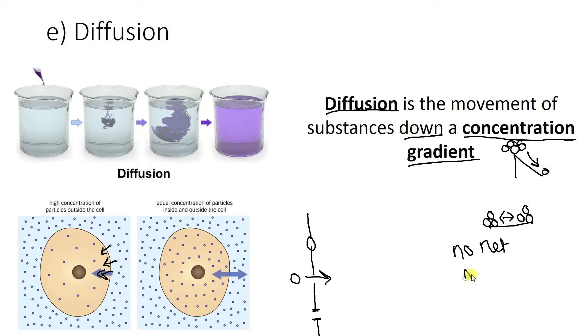No net movement. That doesn't mean that things don't move at all. It just means that there's an equal flow of stuff going out as there is going in. So there's no net change. There's no overall change in the two sides of it. Okay, so that's how the cell membrane is involved.